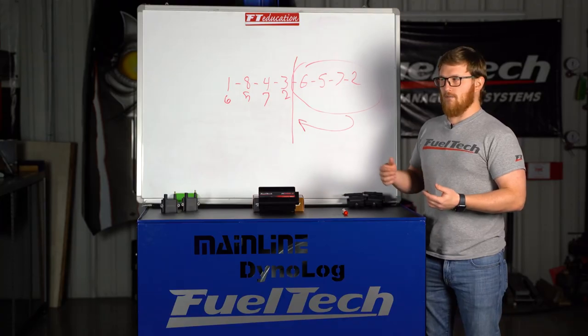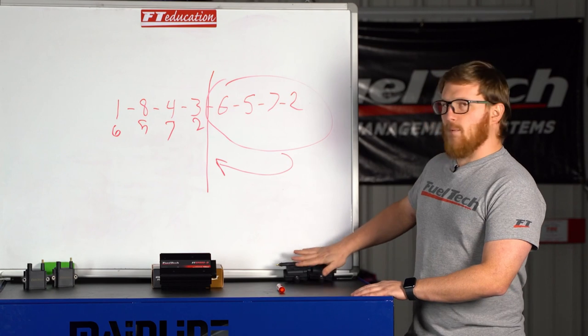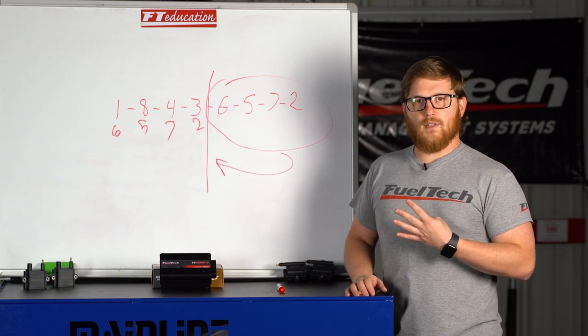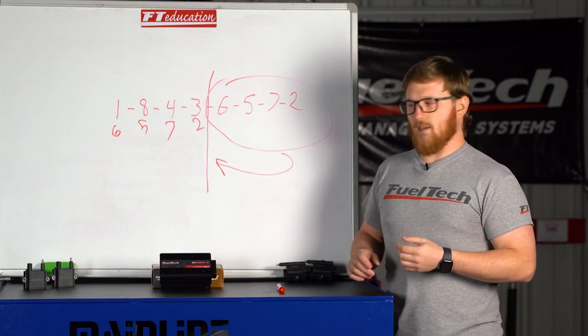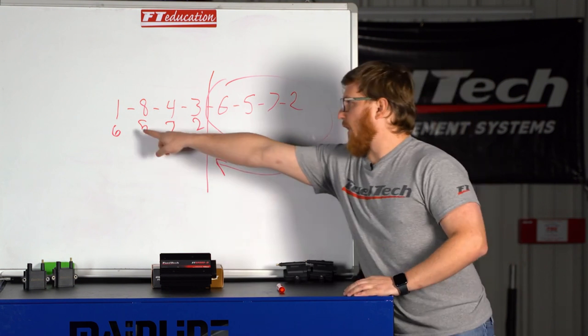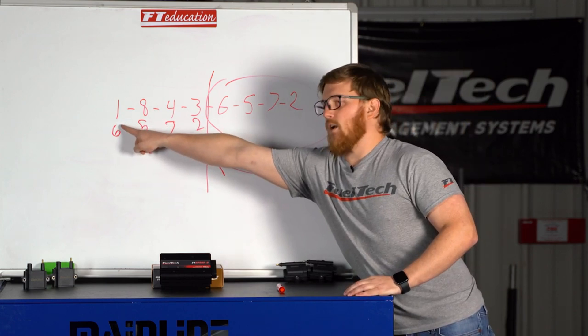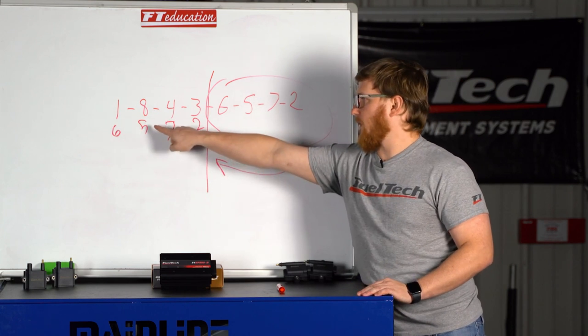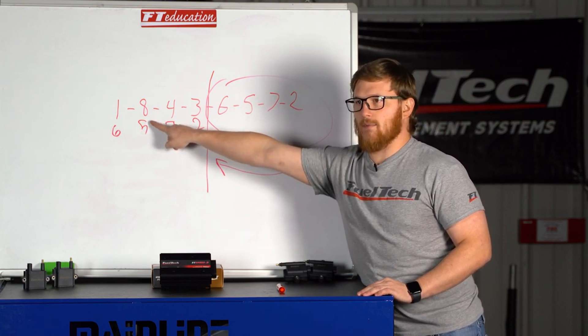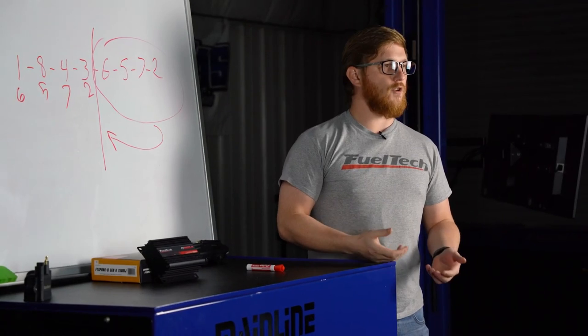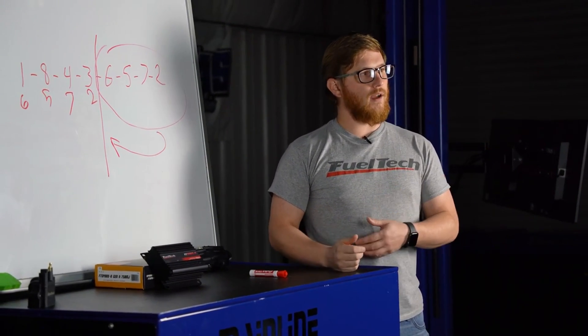What you would do is for instance, on a V8 wasted spark, you can do four outputs to control eight coils because you're splitting them. So you would have one output that would be attached to one and six at the same time, one output that would be attached to eight and five at the same time, and so on. That makes it so you only need four outputs to control a V8 with coil on plug.